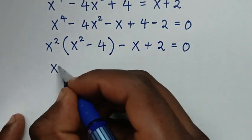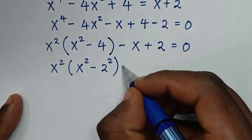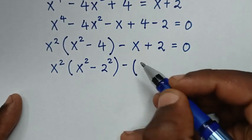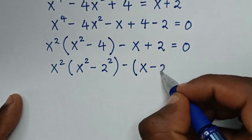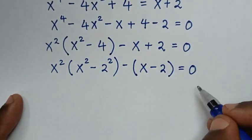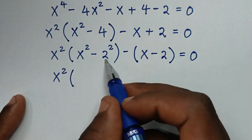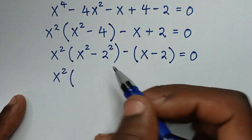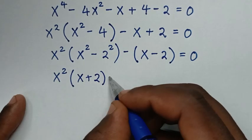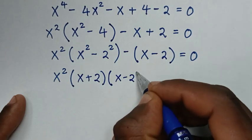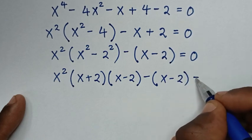We factorize by taking x² as common: x²(x² - 4), and the remaining terms are -x + 2. We note that x² - 4 is the same as x² - 2², a difference of two squares. We also take negative out of the bracket for the remaining part, giving negative(x - 2). So we have x²(x + 2)(x - 2) minus (x - 2) equals 0.